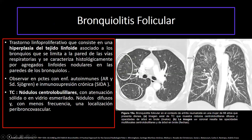Bronquiolitis folicular. Este es un tipo de bronquiolitis debido a un trastorno linfoproliferativo que consiste en la hiperplasia del tejido linfoide asociado a los bronquios, limitado a la pared de las vías respiratorias, caracterizado histológicamente por agregados linfoides nodulares en las paredes de los bronquiolos. Se va a observar en pacientes inmunodeprimidos como VIH, síndrome de Sjögren o pacientes con artritis reumatoide. En la tomografía vamos a observar nódulos intralobulillares con atenuación sólida o en vidrio esmerilado; los nódulos van a ser difusos y con menos frecuencia van a tener localización peribroncovascular.